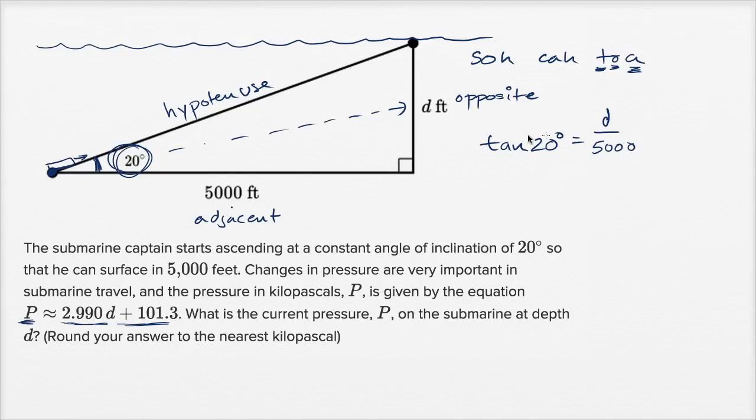If we want to solve for d, we can just multiply both sides by 5,000. Multiply both sides by 5,000, and we're going to get d equals—I'm just swapping sides here—5,000 times the tangent of 20 degrees. Then we can take whatever this value is and substitute it and round to the nearest kilopascal.